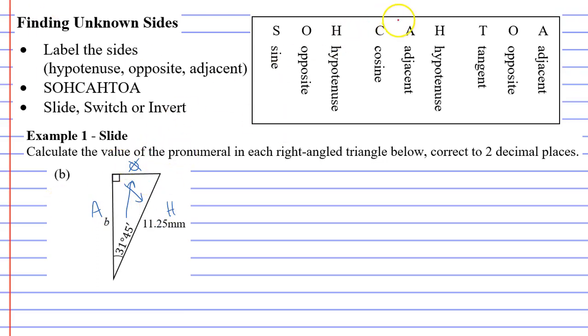If we look at SOHCAHTOA, we can see A and H in the middle of our acronym. It goes CAH. So we're going to do SOHCAHTOA, and we're doing the middle part of our acronym.